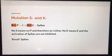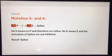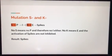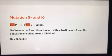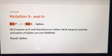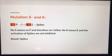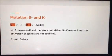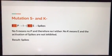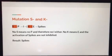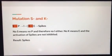A mutation in S and K would, however, produce spikes, because while S is not coded for, K is not present either, which allows E to be expressed.